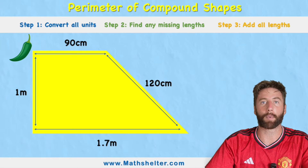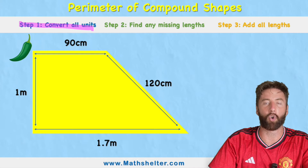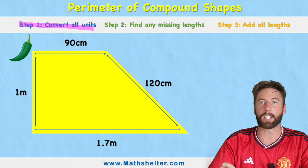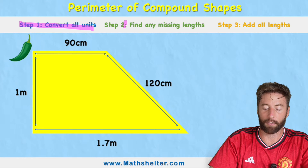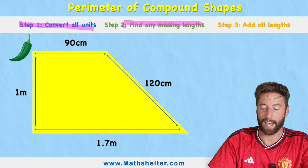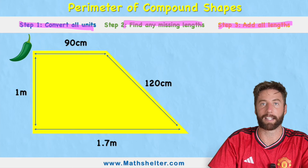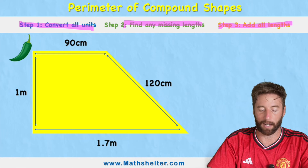So what steps are we going to follow today? Well, step one: we're going to convert all of our units to make sure we're measuring in the same units. Then we're going to find any missing lengths, and then we're going to add all of our lengths together to get the perimeter.